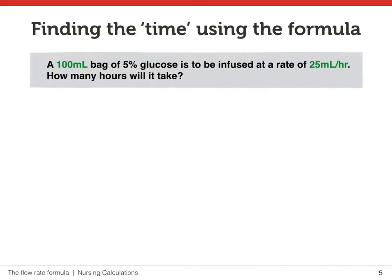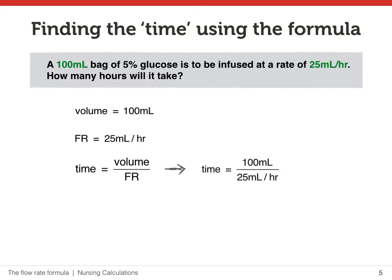Let's put this formula to use. Here we have a problem whereby we know the volume of the liquid to be infused into the patient, and we know the flow rate. The missing factor here is the time. The volume is 100 mils, and the flow rate is 25 mils per hour. The formula for time is volume divided by flow rate. Plugging those values in: 100 mils divided by 25 mils per hour — the mils will cancel.